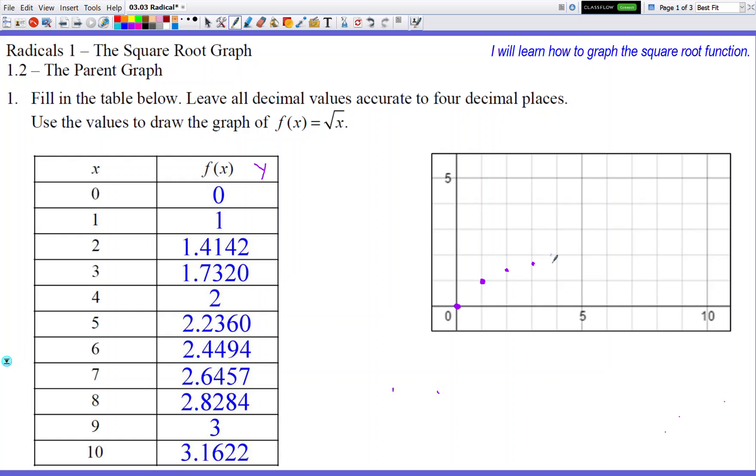Okay, and then 4, 2. And then 5, 2.2. So maybe about right there. And then 6, 2.44. So hopefully around there. And then 7, 2.6. So it's only growing up real small now, right? It's kind of almost leveling off. It's increasing at a very slow pace now.